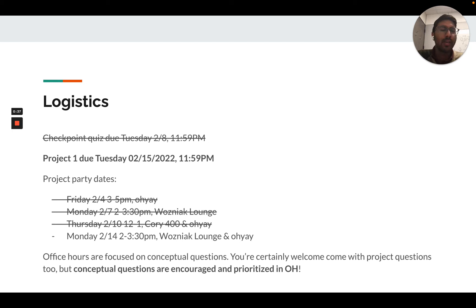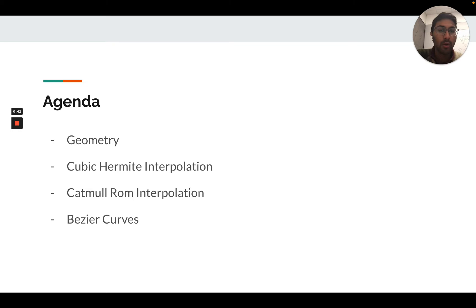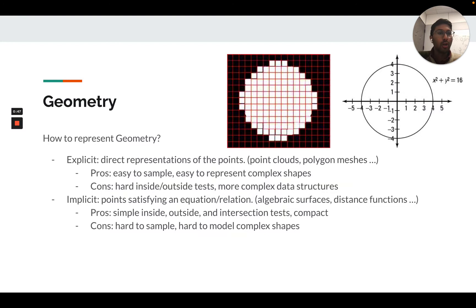We'll be talking about Geometry, Cubic Hermite Interpolation, Catmull Rom Interpolation and Bezier Curves. To start with Geometry, it's a very relevant topic in graphics. Geometry processing and computer graphics are closely related fields. You can represent geometry in a lot of different ways. Broadly, representations of geometry and scenes fall into two categories: explicit geometric representations and implicit representations.